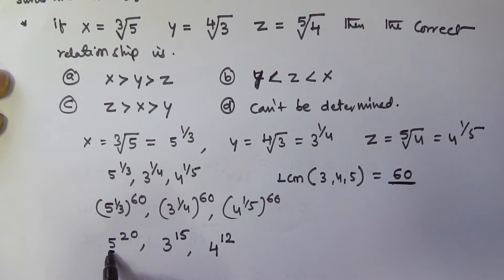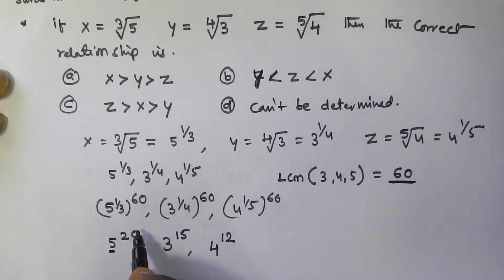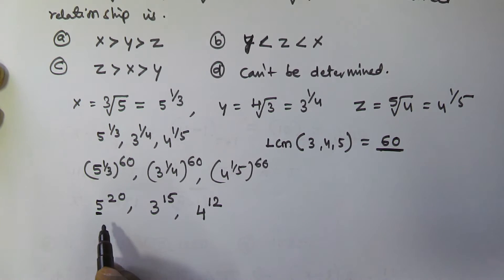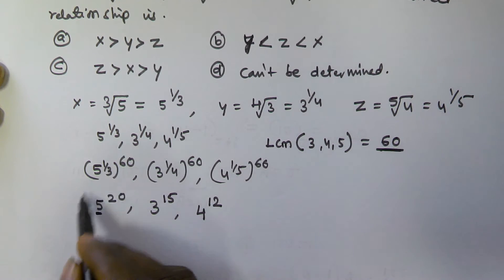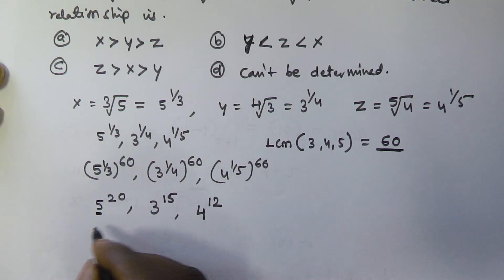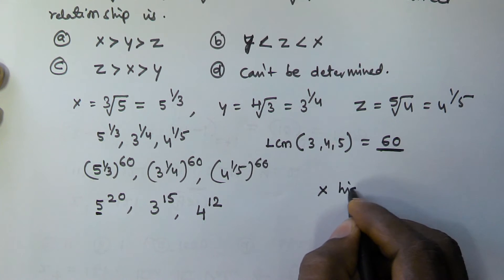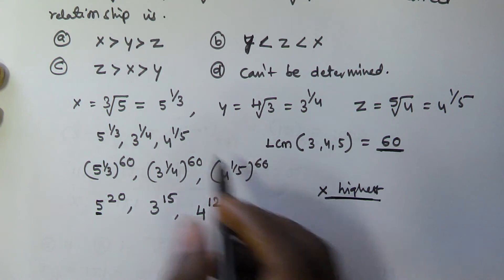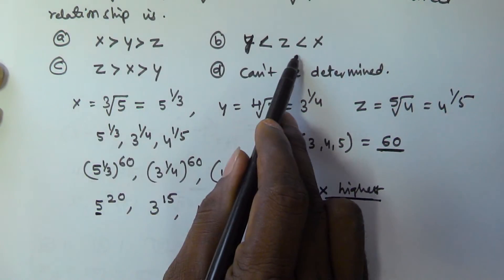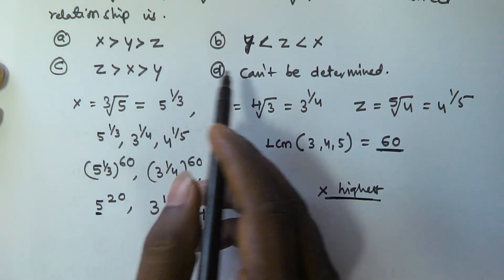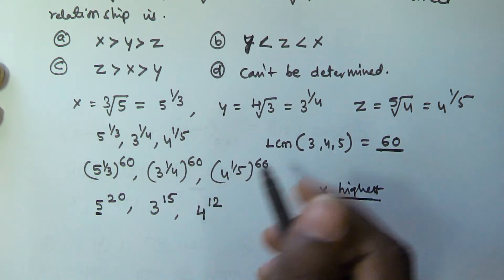From these three numbers it is clear that the base of 5^20 is greater and the power is also higher compared to the other two. So x is clearly the highest number. Looking at options A and B, in both cases x is the highest — so we cannot decide the answer yet. We have to determine which of the remaining two is greater.